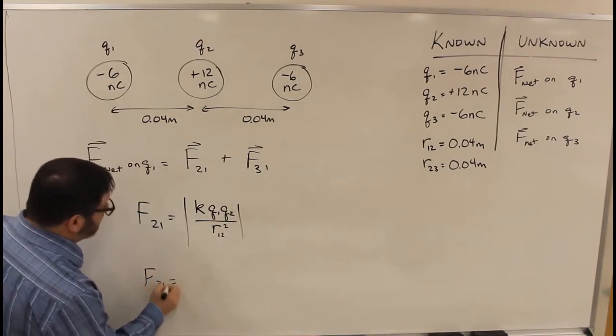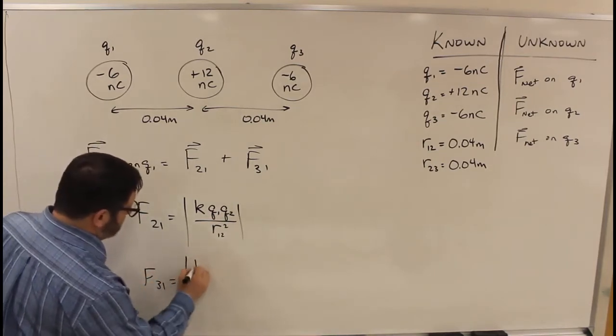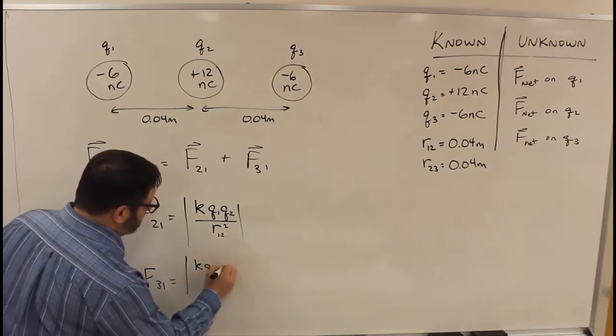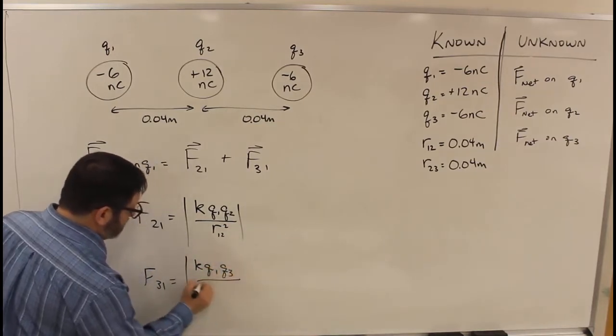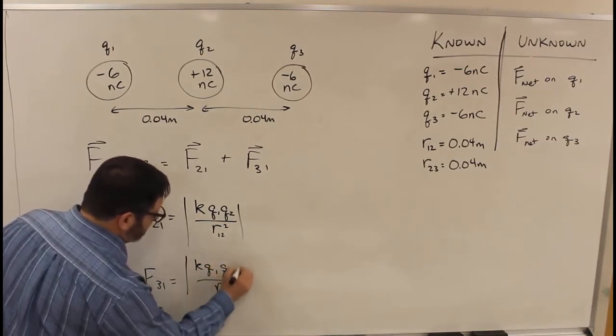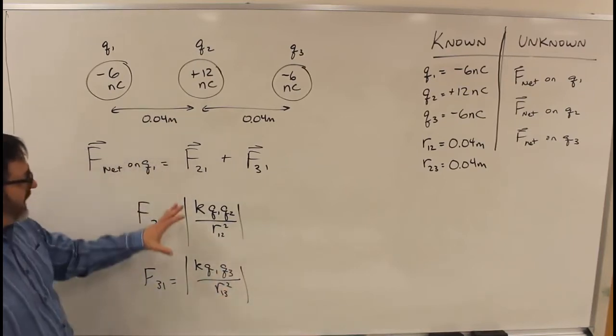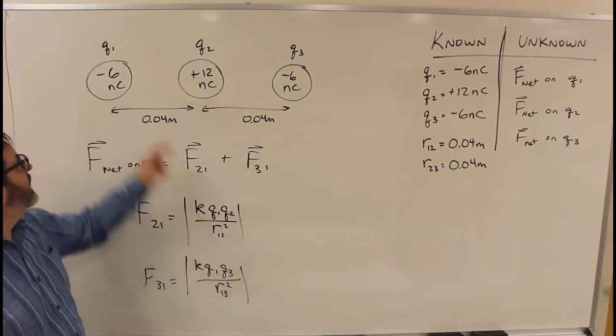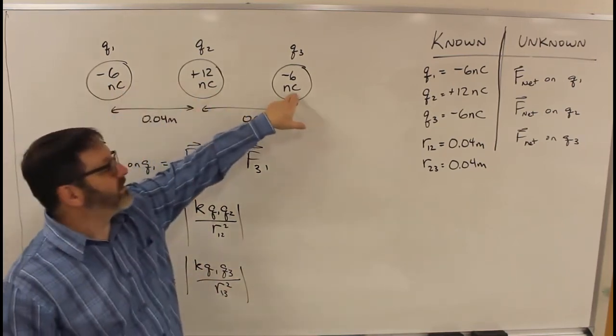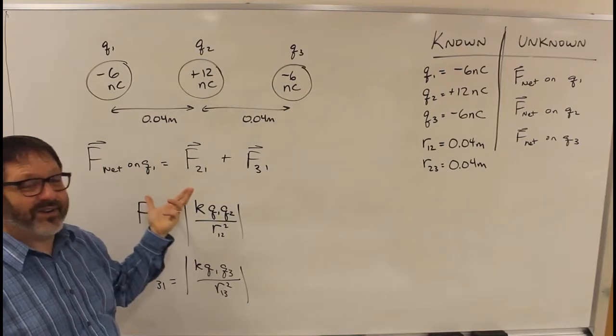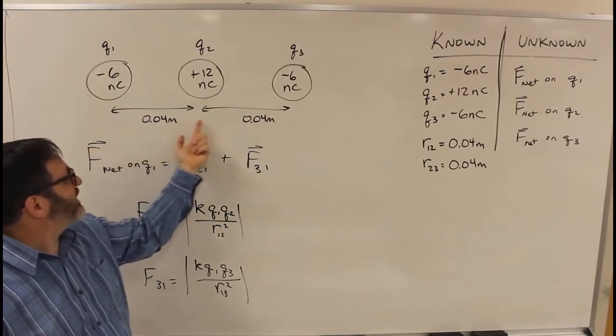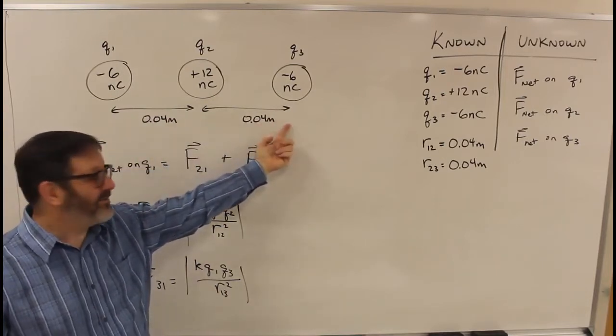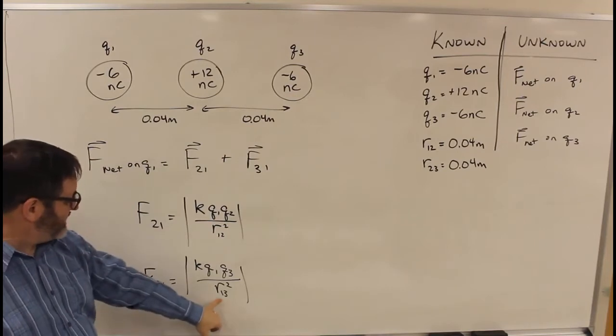Force of thing 3 on thing 1 is KQ1Q3 over R13 squared. And we know everything here, except we don't know R13. That would be the distance from thing 1 to thing 3. It's not too hard to figure out. It's 0.04 plus 0.04, so 0.08 is this one.